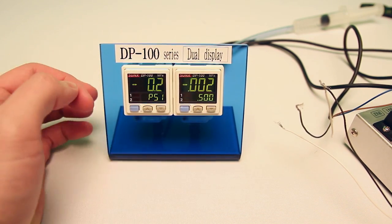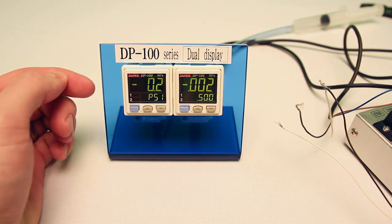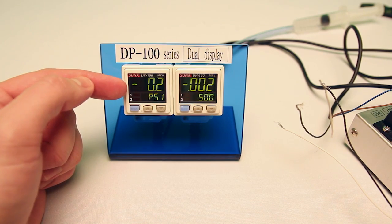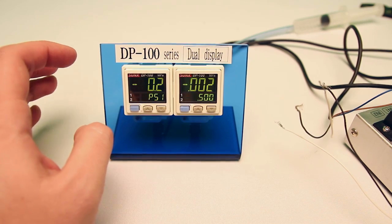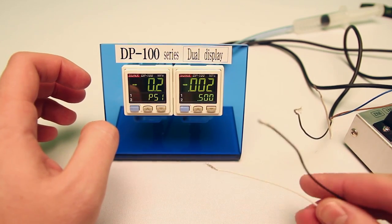This is great for machine builders who are constantly setting sensors to the same parameters. You only have to do it once and then copy it every other time. It's a really fast process and it's all done through the output wires.